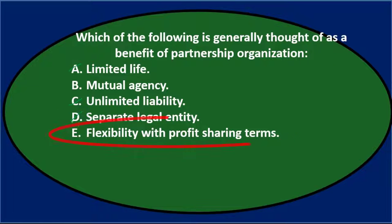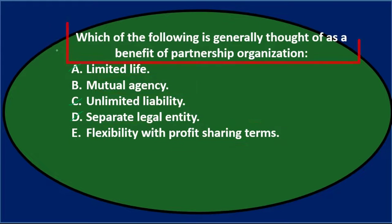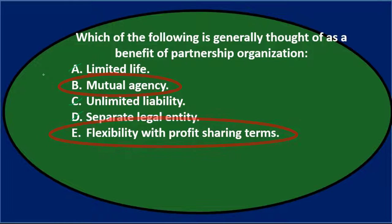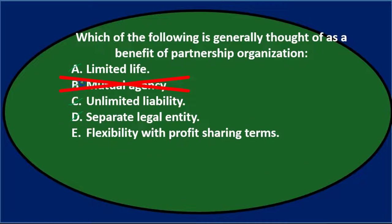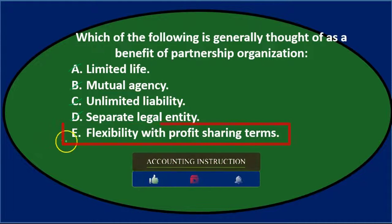Option E says flexibility with profit sharing terms, and that sounds pretty good. So I'm going to narrow it down to B and E. Reading through again: which of the following is generally thought of as a benefit of partnership organization — B) mutual agency, or E) flexibility with profit sharing terms? Of the two, mutual agency could be thought of as positive or negative, but probably negative in most discussions.